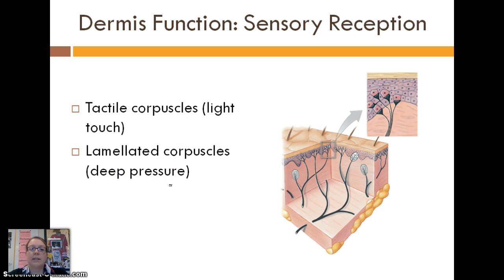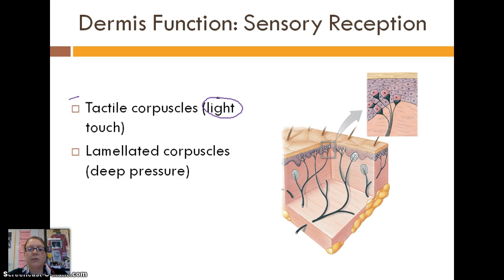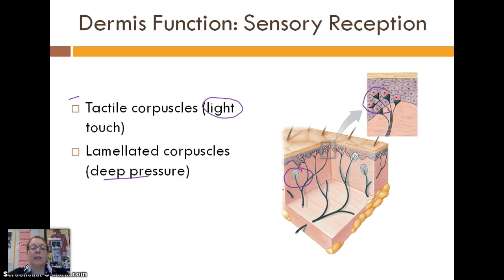Finally, the last dermis function is sensory reception — a fancy way of saying touch. There are different types of touch sensors in our integument, and while the names aren't as critical, what's important is that different degrees of pressure can be detected by different sensors. We have tactile corpuscles, which are light touch receptors, and lamellated corpuscles embedded deeper in the dermis for deep pressure detection.